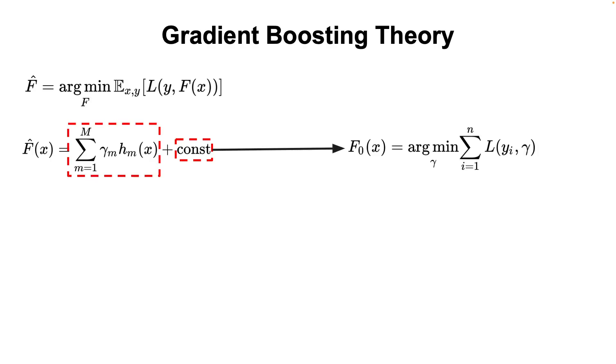The constant value is our initial best guess, called f0, and it is computed as the value that minimizes our loss function.